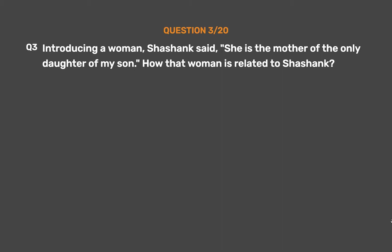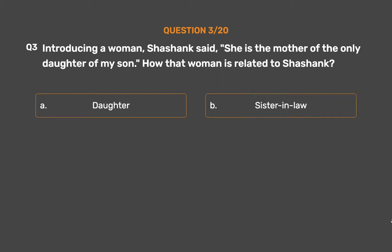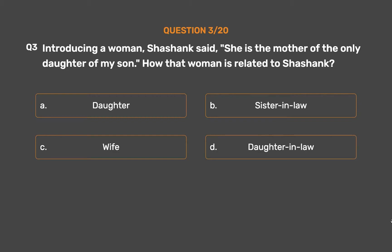Question number 3. Introducing a woman, Shashank said, 'She is the mother of the only daughter of my son.' How is that woman related to Shashank? Option A: Daughter. Option B: Sister-in-law. Option C: Wife. Option D: Daughter-in-law.